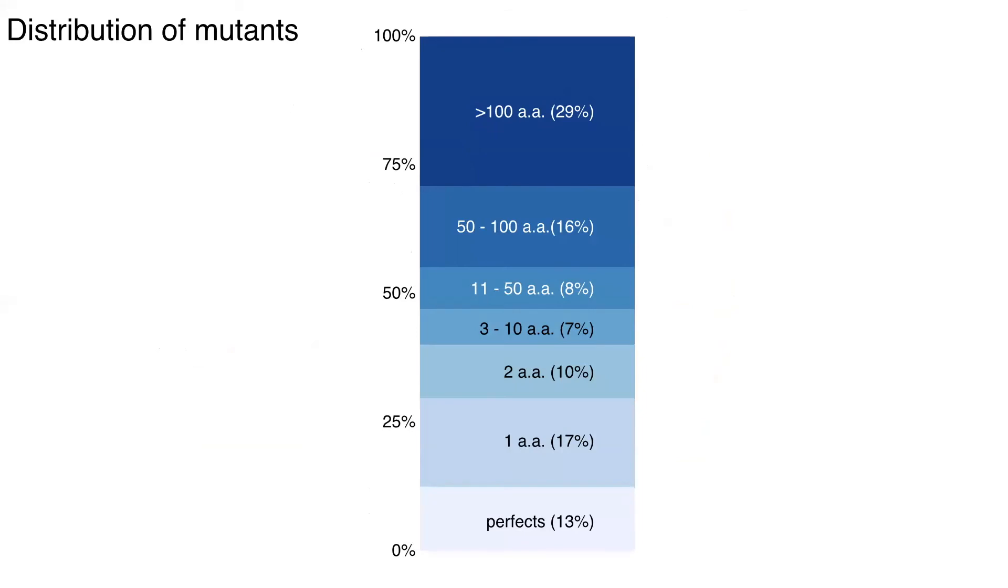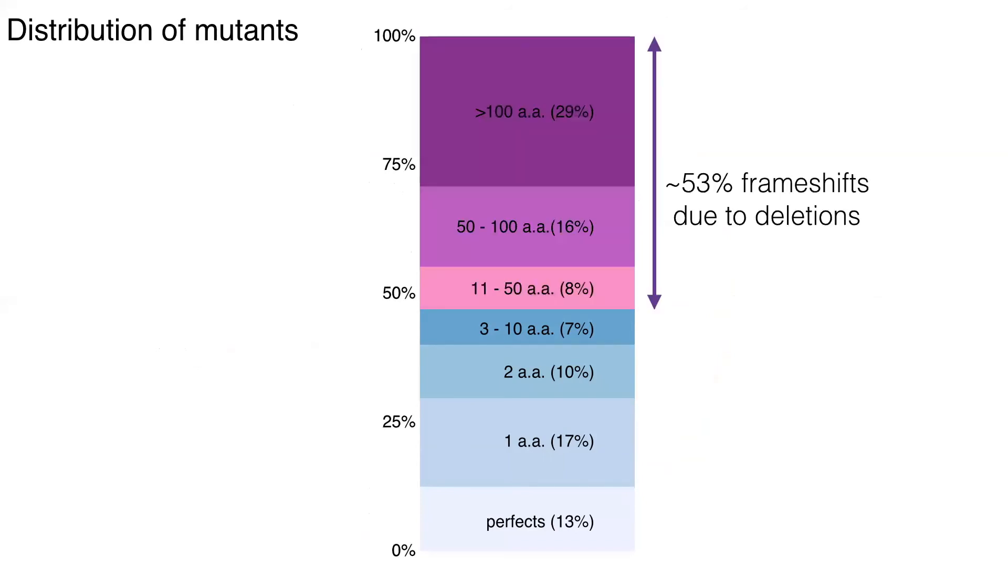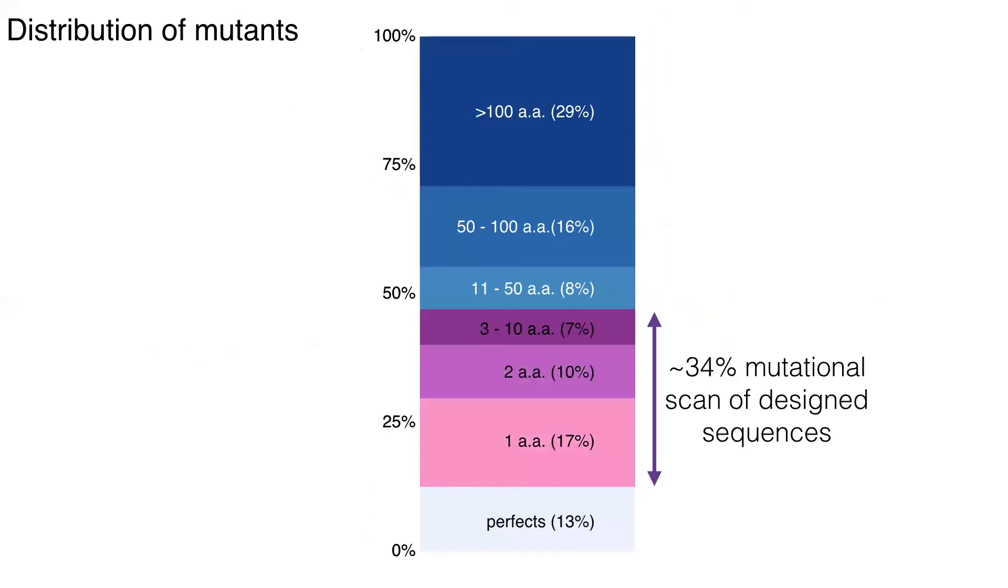So as I mentioned earlier, there's a lot of errors in our libraries. And so in the initial implementation of DropSynth, a lot of these errors were low distance away from your design variant. And you can think of these as a very shallow mutational scan around each of your points. The rest of them being brain shapes primarily due to dilutions, but about 30% of the data is actually usable mutations.